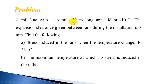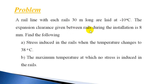We have 30-meter-long rails that are installed at minus 10 degrees centigrade. Due to temperature change, the rails will expand when weather conditions change. If no expansion allowance is provided between rails, the rails will be subjected to compressive stress, and may buckle. So to avoid this, at the time of installation, we provide some clearance or gap between each rail.